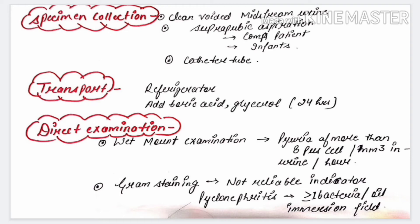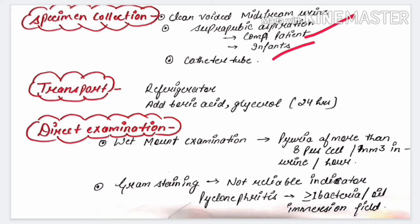For specimen collection in UTI, we can collect clean voided midstream urine, suprapubic aspiration — which is taken only in coma patients or infants — and urine from a catheter tube. Catheter samples should not be collected from the bag.